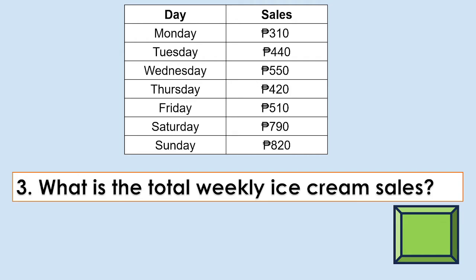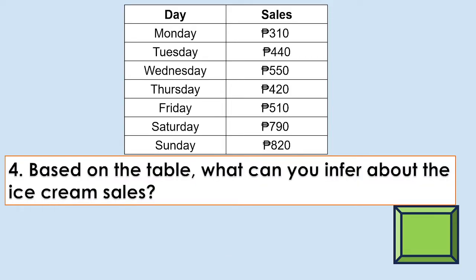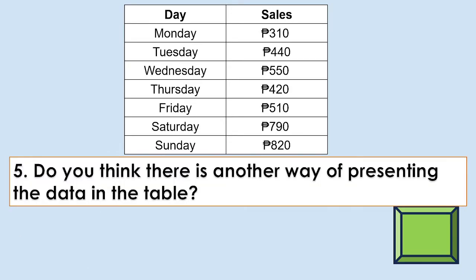Number 3: What is the total weekly ice cream sales? The answer is 3,840 pesos. Based on the table, what can you infer about the ice cream sales? The answer is the ice cream sales are high during weekends. Number 5: Do you think there is another way of presenting the data in the table? The answer is yes.